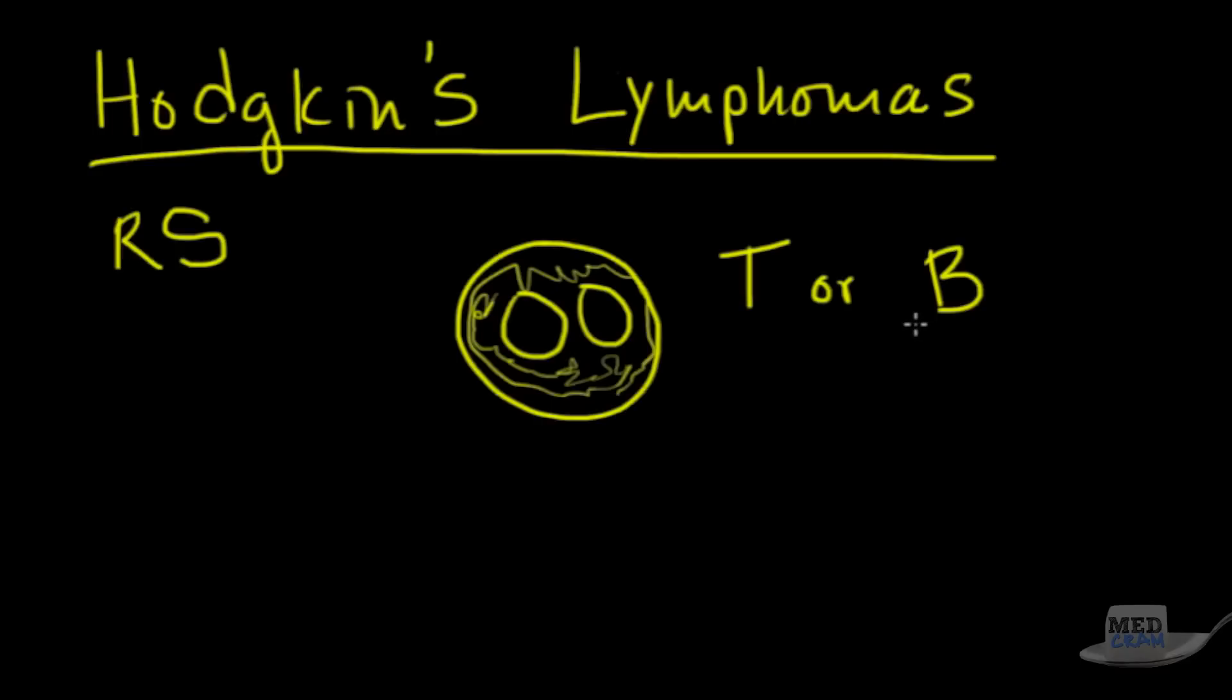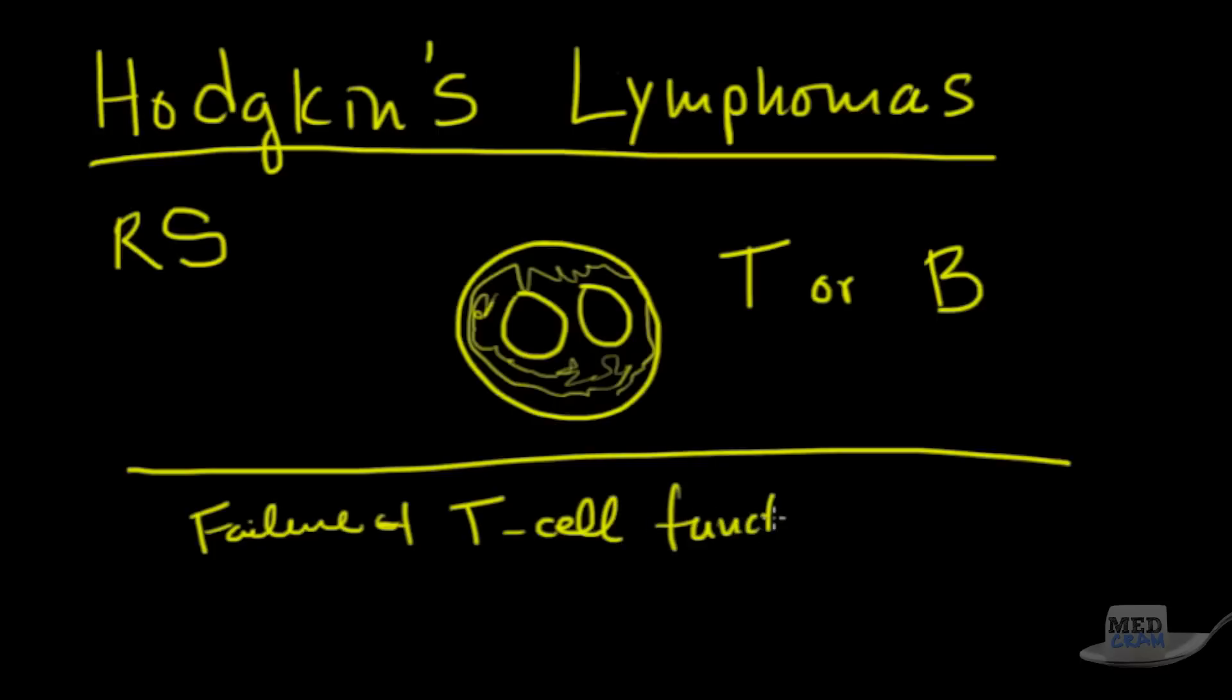It can spread to any part of the body if left long enough. But the key problem with Hodgkin's lymphoma is not the Reed-Sternberg cells, but actually it is a failure of T cell function. So what's another disease that is a failure of T cell function? HIV. But this is not HIV. This is Hodgkin's lymphoma. But you've got a failure of T cell function, but these Reed-Sternberg cells that you can see can either be T cells or B cells. And they can spread basically anywhere in the human body if left for long enough.